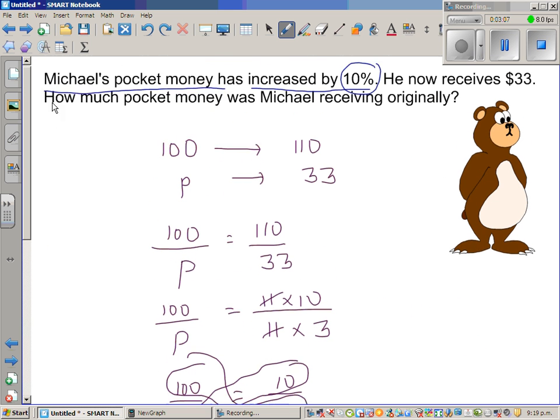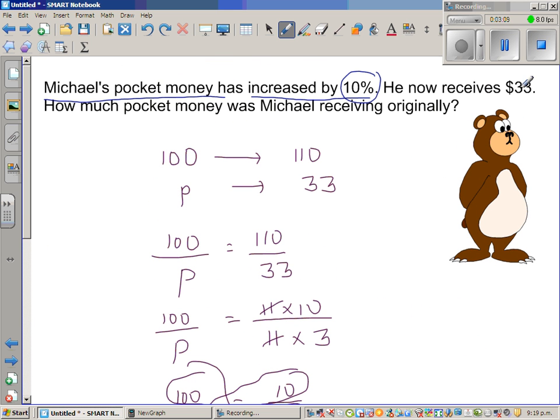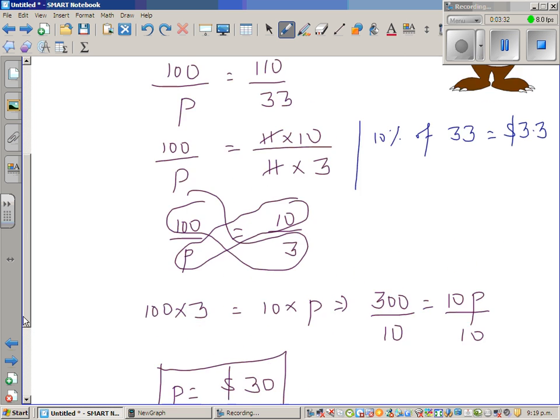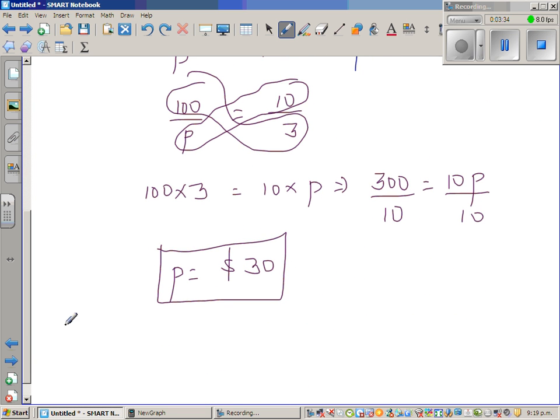Now one of the common mistakes that students make is you take 10% of this and then you think that you get the original amount. No, if you take 10%, say 10% of 33 is $3.30. And if you take 3.3 from this, you will not get 30. So that's a common mistake.